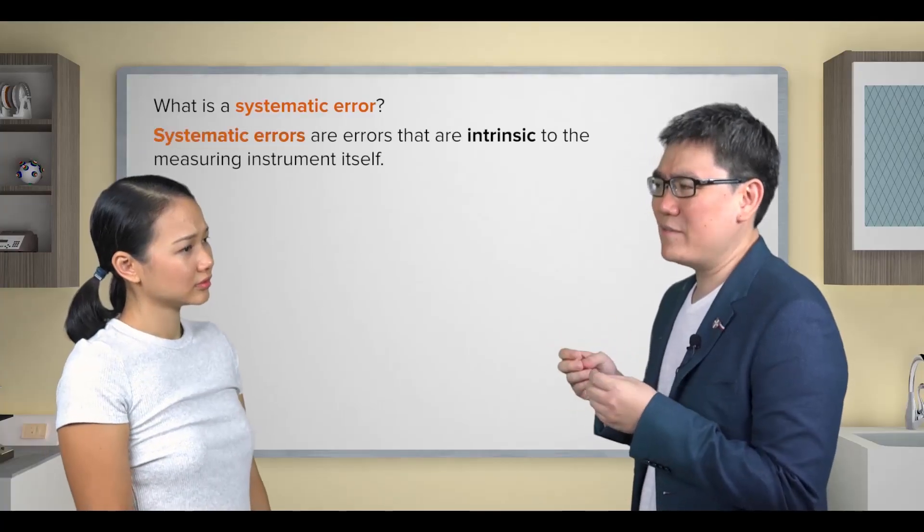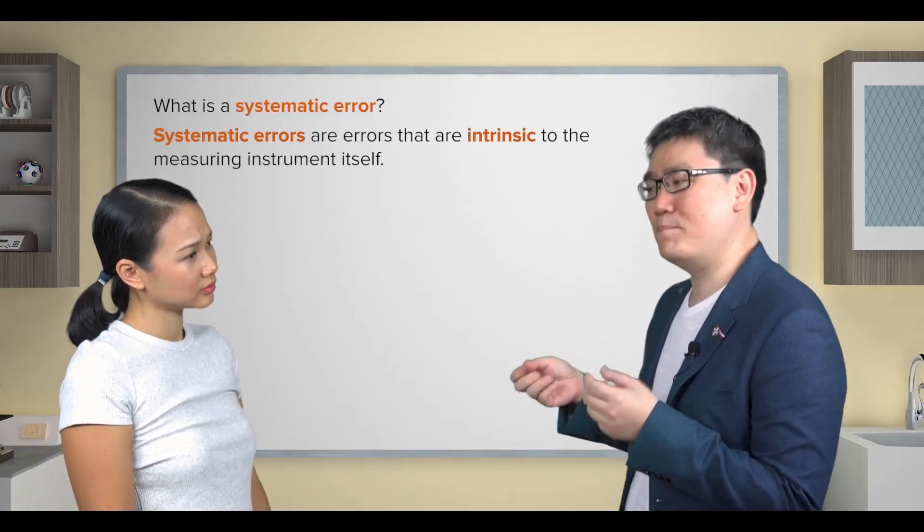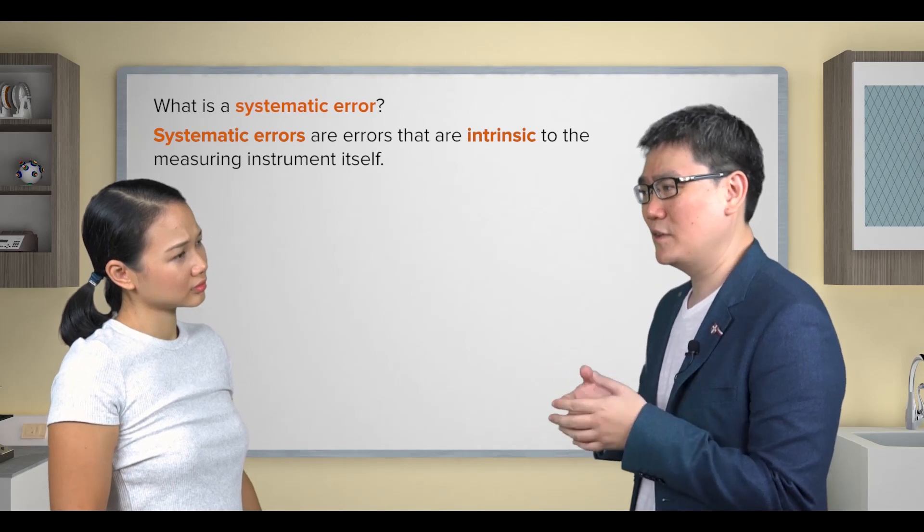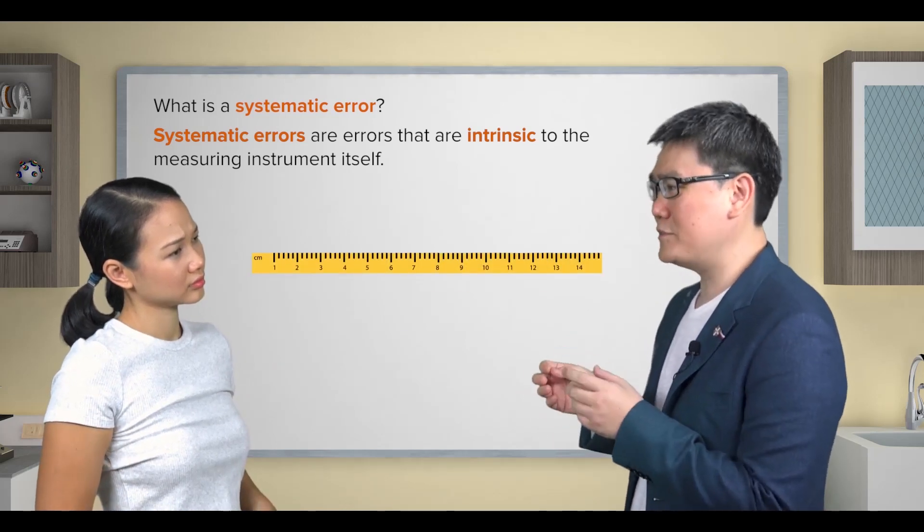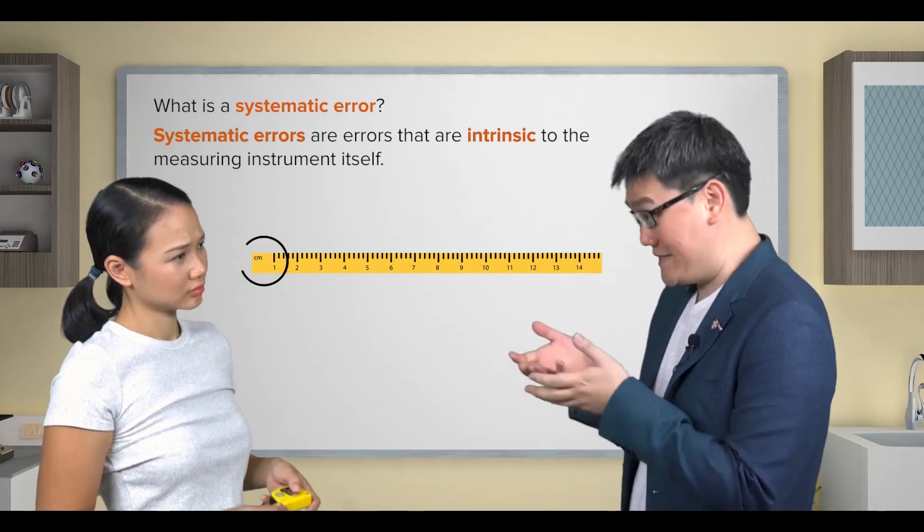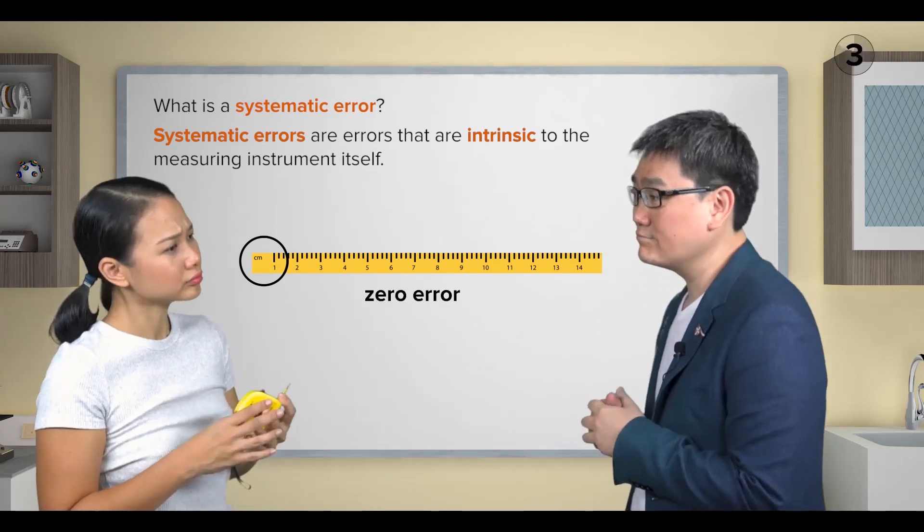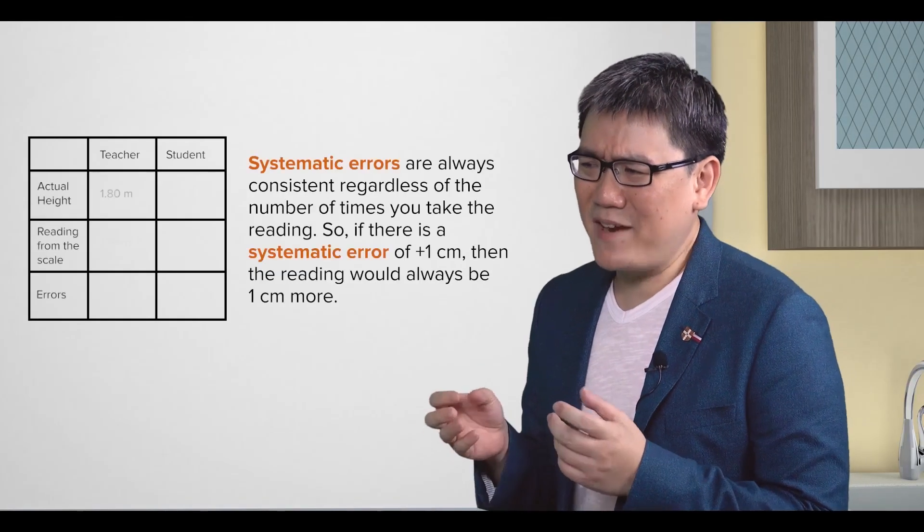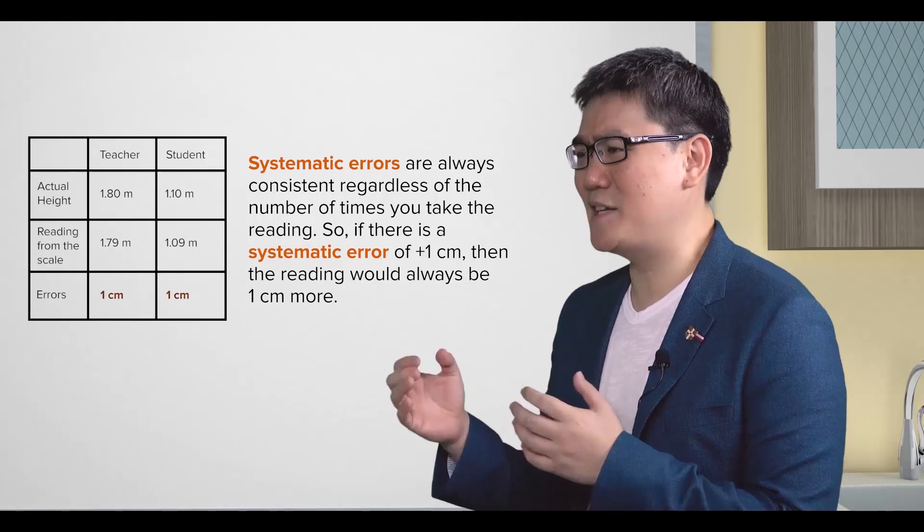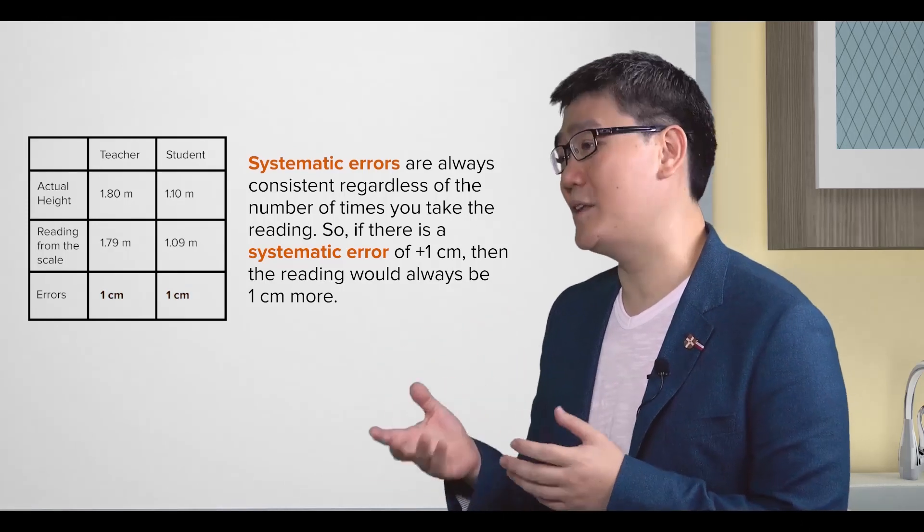Systematic errors are errors that are intrinsic to the measuring instrument itself. For example, a measuring instrument might not start from zero and this is known as a zero error. Usually, such errors are always consistent regardless of the number of times you take the reading.